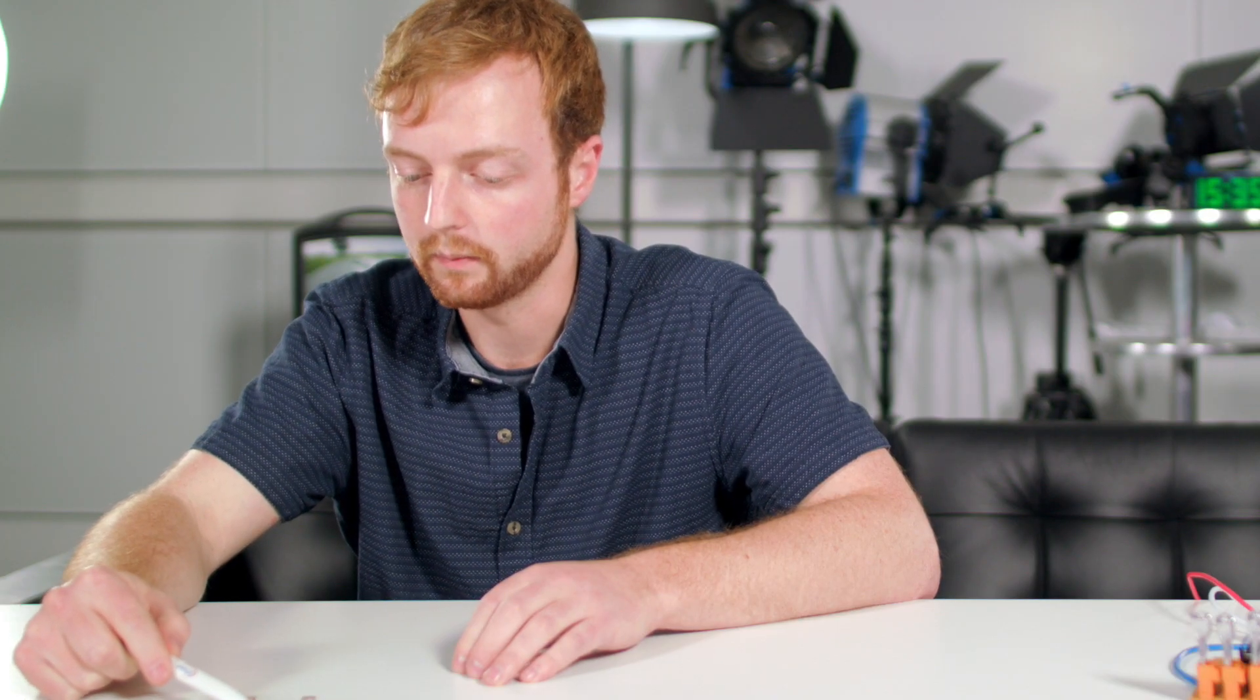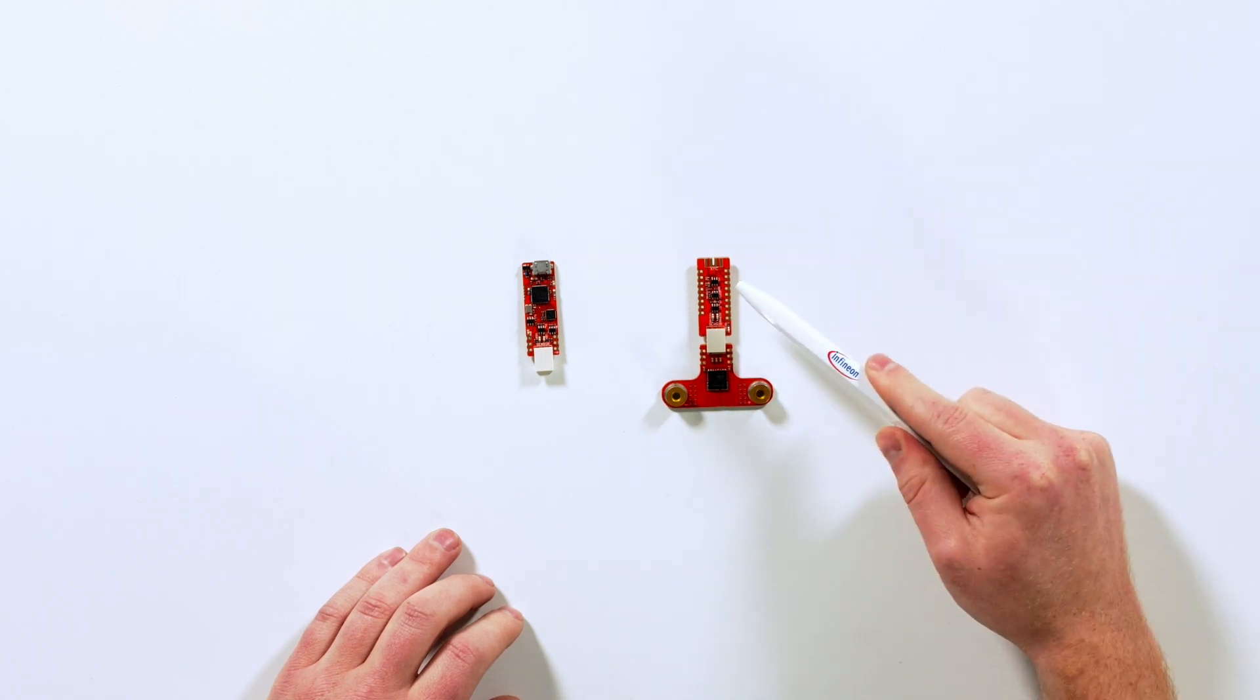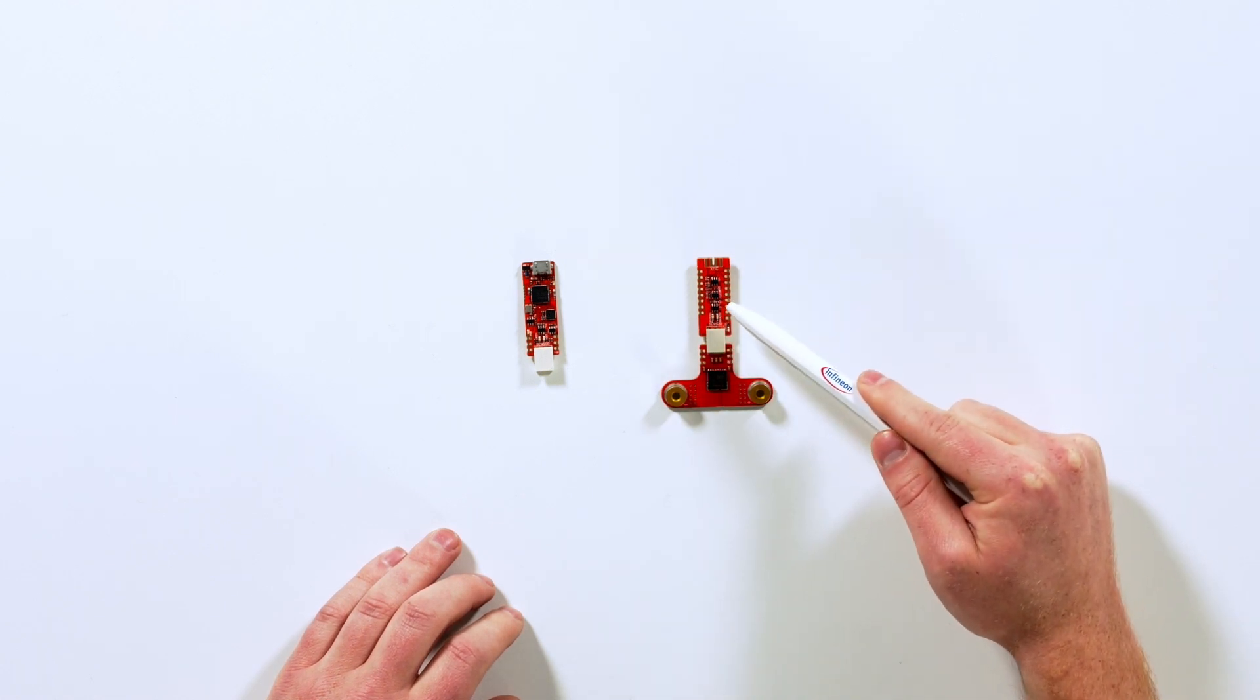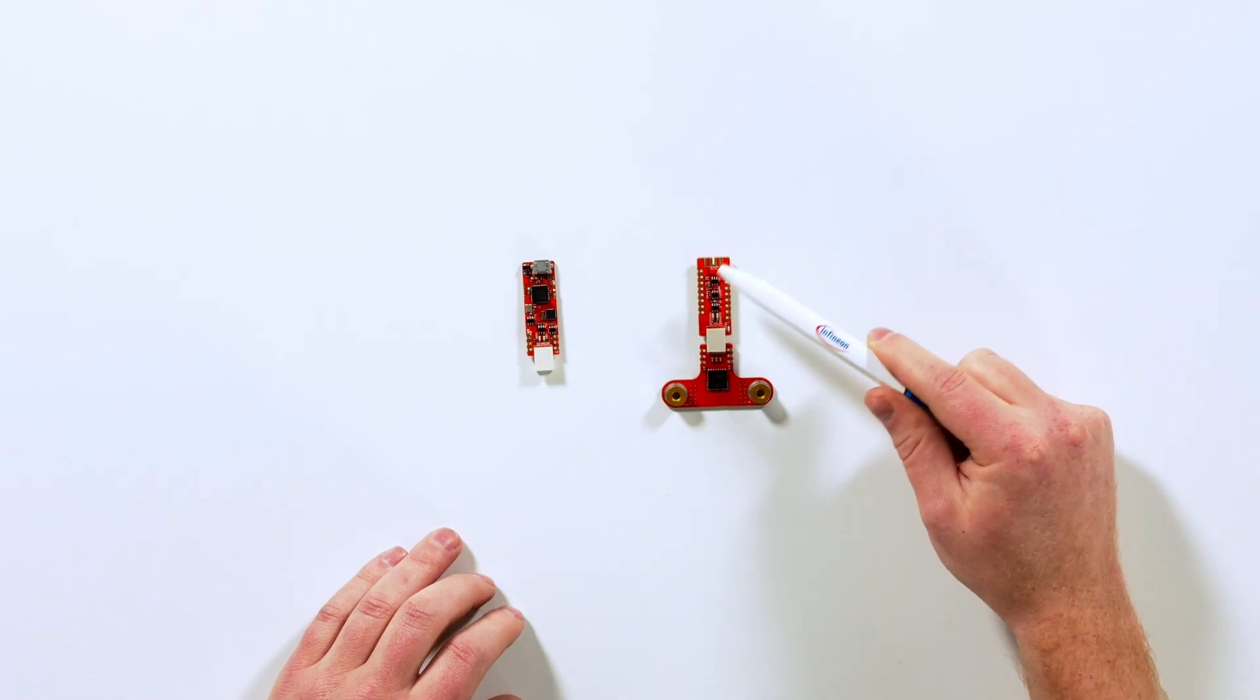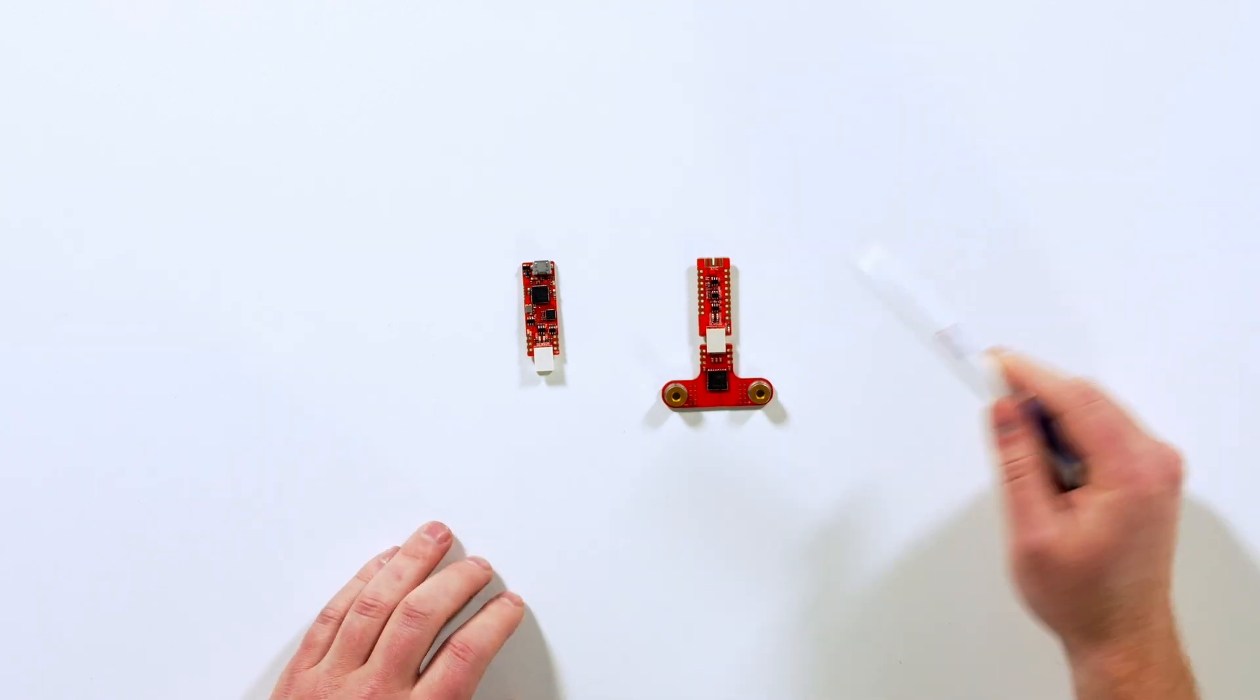Next to this we have some passive components on the Shield, but what's missing here is a microcontroller. A fitting microcontroller would be the XMC2Go which fits on this pinout or an Arduino with a Shield2Go adapter.